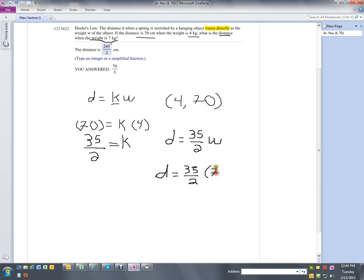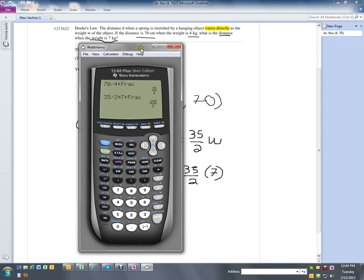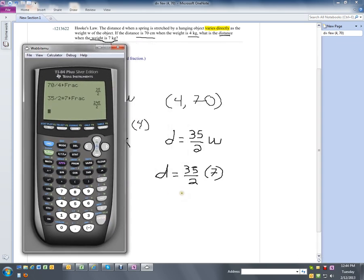And if you want to use your calculator to reduce that fraction, 35 divided by 2 times 7 as a reduced fraction is going to give us 245 over 2. So my distance will be 245 over 2.